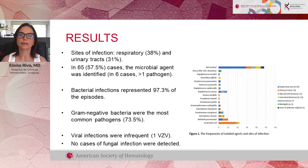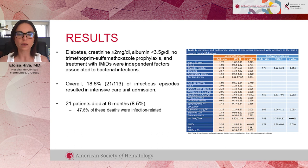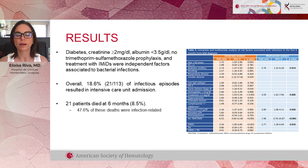Viral infections were infrequent and no cases of fungal infections were described. In the multivariate analysis, a history of diabetes, creatinine above 2, serum albumin lower than 3.5, no use of antibacterial prophylaxis, and treatment with immunomodulatory drugs were independent factors associated with bacterial infections. At six months, 21 patients had died, and almost 50% of them had died due to infectious complications. Overall, 18% of the infectious events resulted in admission to the intensive care unit.